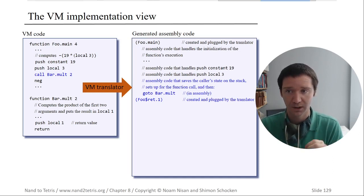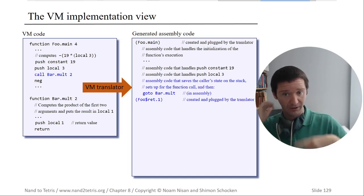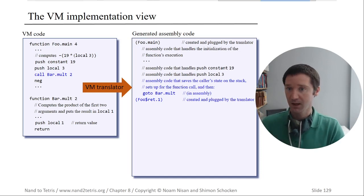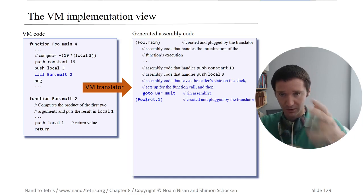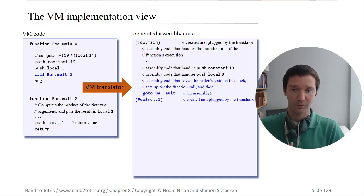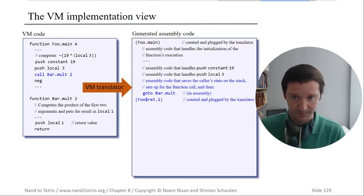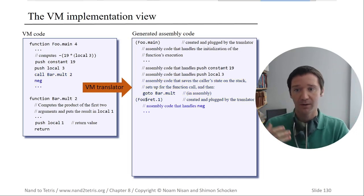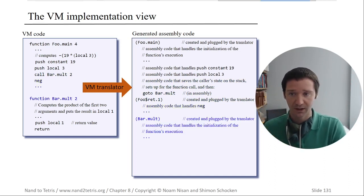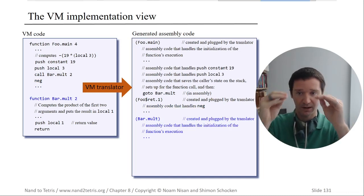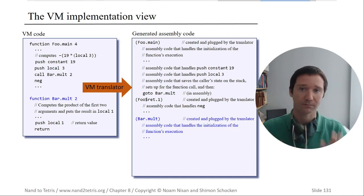We generate a return address using the naming convention: the file name (foo), dollar sign, return dot, and then an incrementing number. This unique label means that when bar.mult finishes it can return to this foo$return label we created. We save this return address onto the stack as well. The code goes line by line, translating from VM code into assembly.